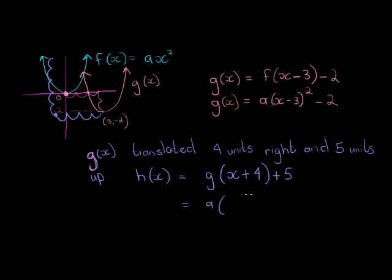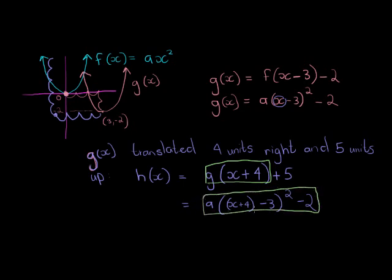So what was G of X? Well, G of X was A. And instead of the X, I must place X plus four. So in that place, I'm going to put X plus four. X plus four. Minus the three squared minus two. That's just for G of X. So I just replaced G of X. And in the place of X, I replaced the X plus four. Now, I still need to add the five outside.